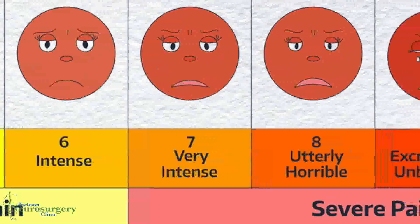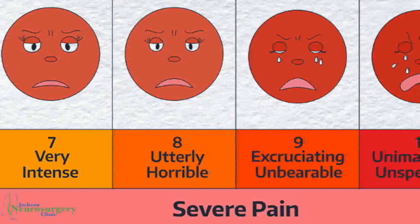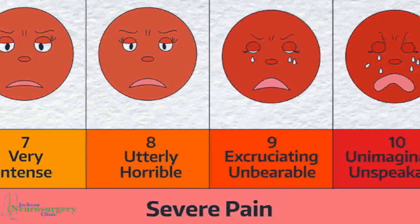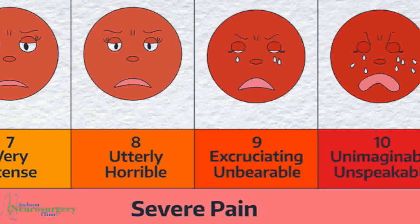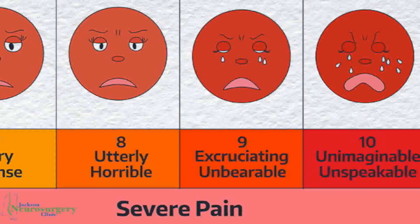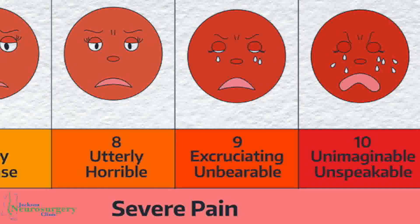The next category of pain is severe pain, in the 7 to 10 range. A 7 out of 10 is very intense, an 8 out of 10 is utterly horrible, a 9 out of 10 is excruciatingly unbearable, and a 10 out of 10 is unimaginable or unspeakable pain. With these levels of pain, the person is essentially disabled — unable to perform activities of daily living such as bathing, dressing, preparing meals, or running errands. They are unable to function independently.